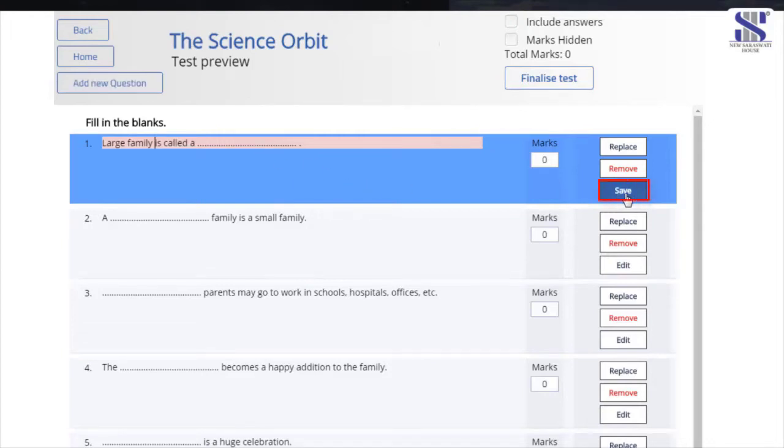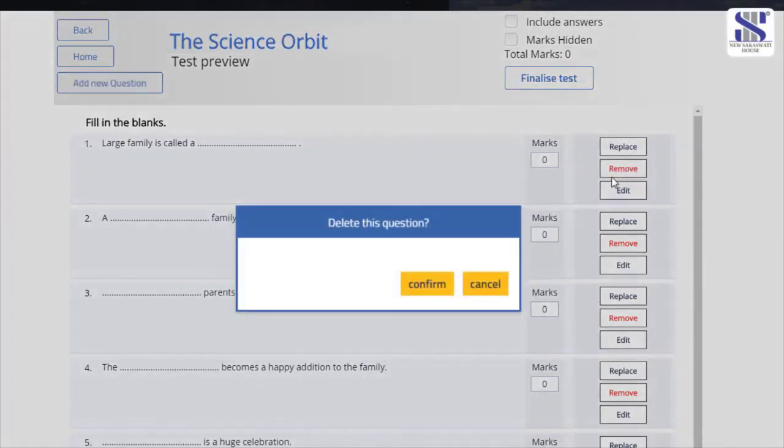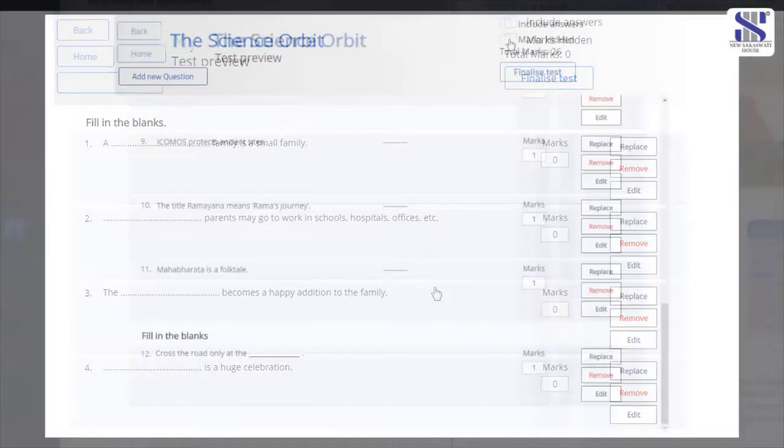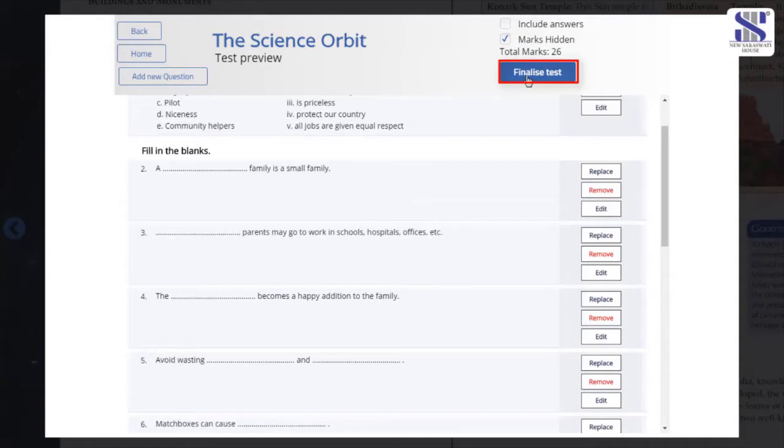Once done, click on save. In case you wish to get rid of a question, click the remove button. Click on the hidden marks button and include answer button, if needed. In order to freeze the test, click on the finalize test button.